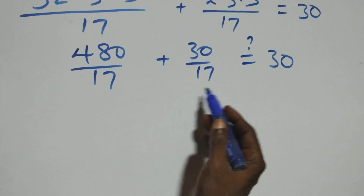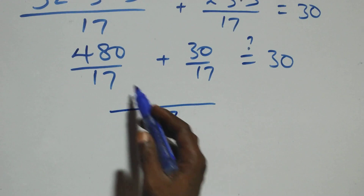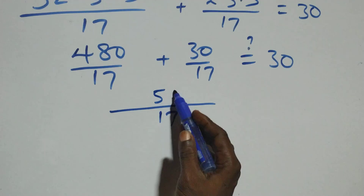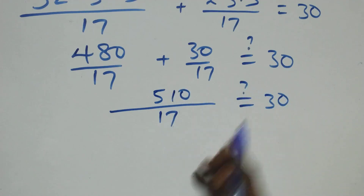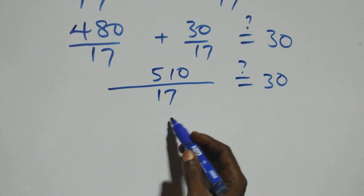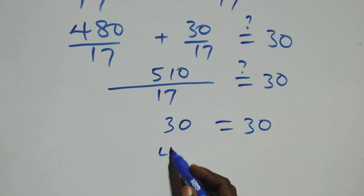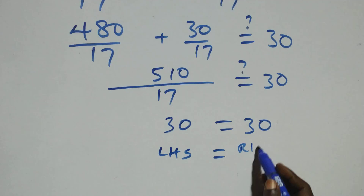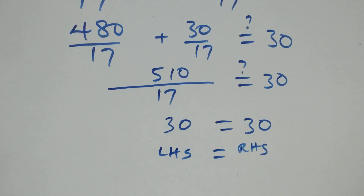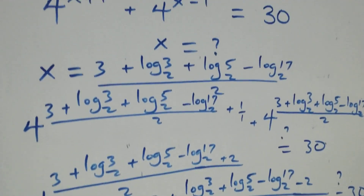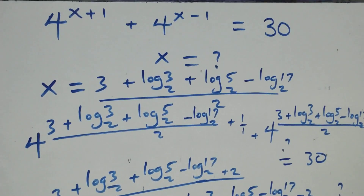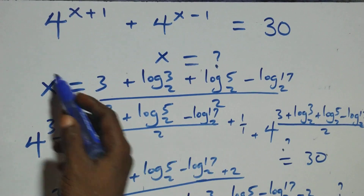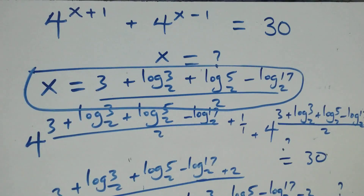Bringing together over 17: 480 + 30 = 510, and 510 / 17 = 30, which equals 30 on the right side. Left hand side equals right hand side, so we conclude x = (3 + log₂3 + log₂5 − log₂17) / 2 satisfies the given equation. Thank you for watching — don't forget to subscribe for more videos, turn on the notification bell, share, and comment. See you next time!